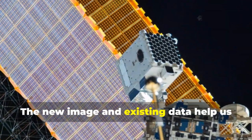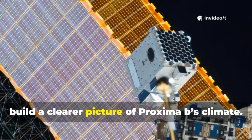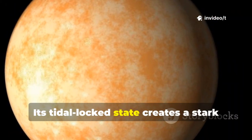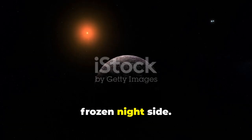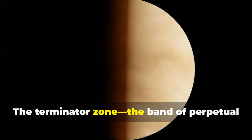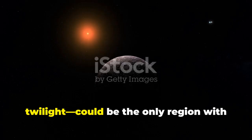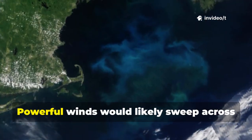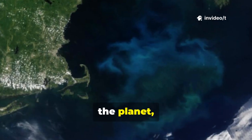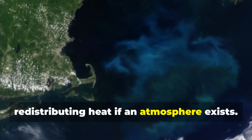The new image and existing data help us build a clearer picture of Proxima b's climate. Its tidal-locked state creates a stark thermal divide, a scorching day side and a frozen night side. The Terminator zone, the band of perpetual twilight, could be the only region with moderate temperatures and potential for liquid water. Powerful winds would likely sweep across the planet, redistributing heat if an atmosphere exists.